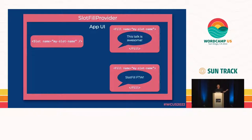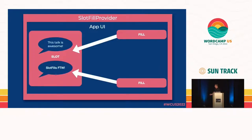Wrapping our UI inside of a SlotFill Provider, we're exposing a named slot on one side. On the other side we're adding two fills, and then the SlotFill Provider takes over and moves the fill contents into the slot location in the order in which they've been registered.